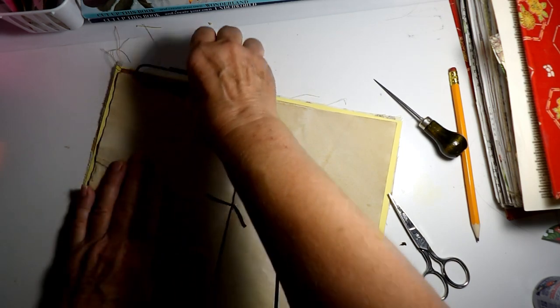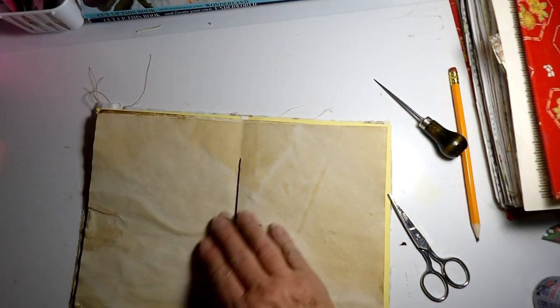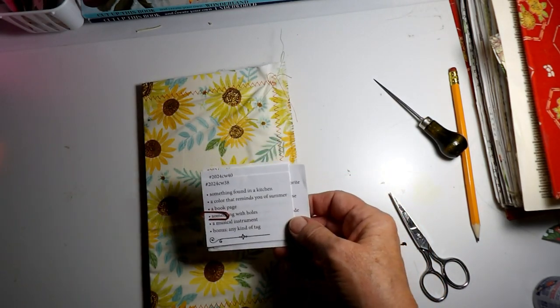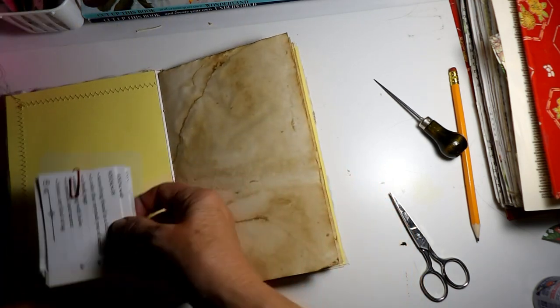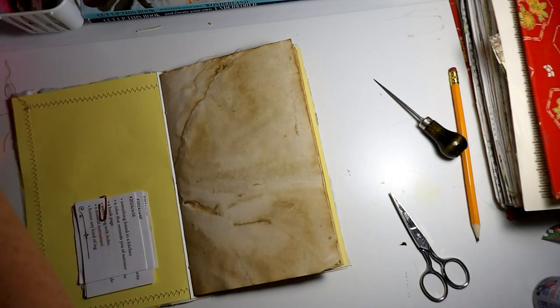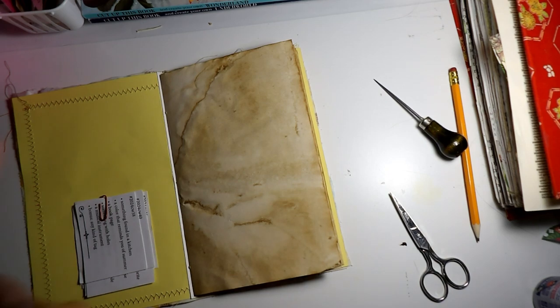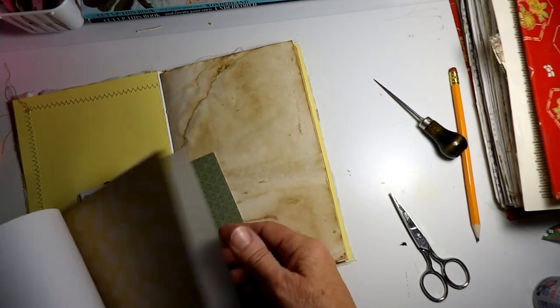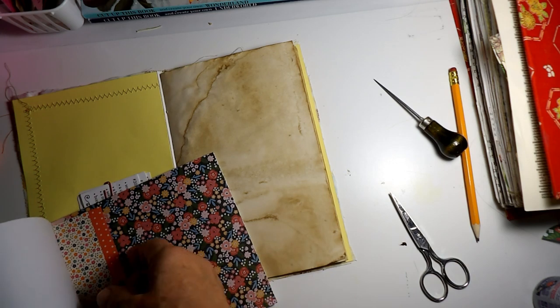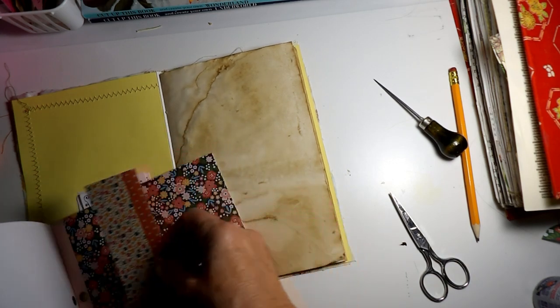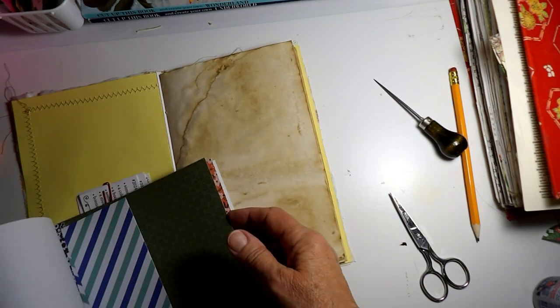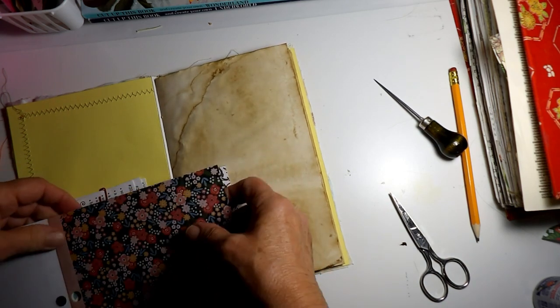So this is my new Marguerite Miller journal, and now I just have to find some paper to put in my pocket. I've got some pretty ones here. That's pretty but it's too small. I don't know. This one I think might look okay, it's got some yellow in it.